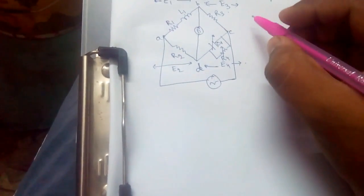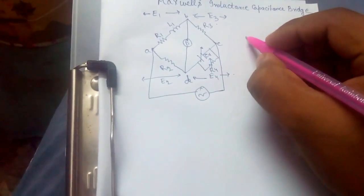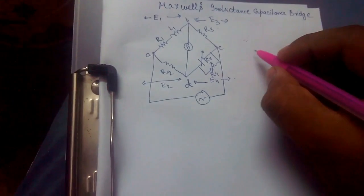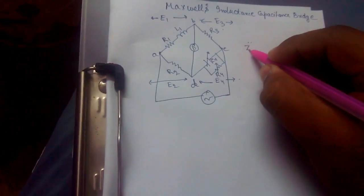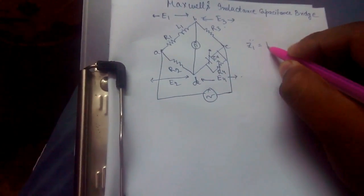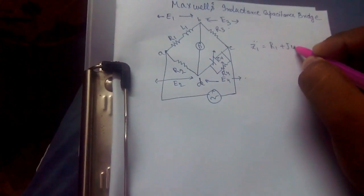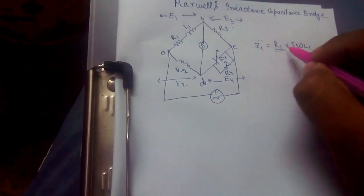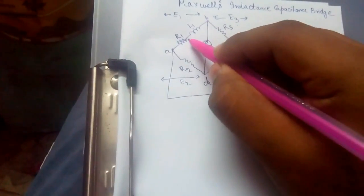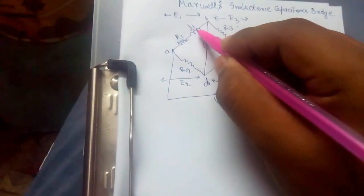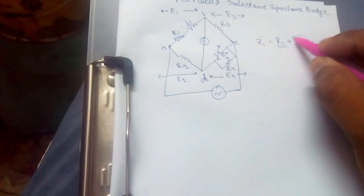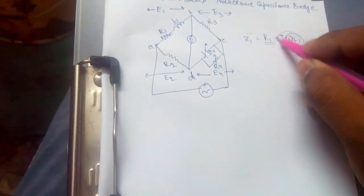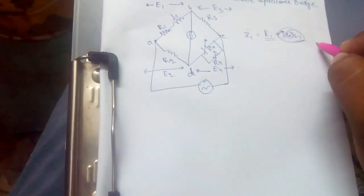Now let's find out the impedances. Z1 would be equal to R1 plus j omega L1, where R1 is the non-inductive resistance and L1 is the impedance factor where omega is the frequency factor and j is the imaginary part for L1.